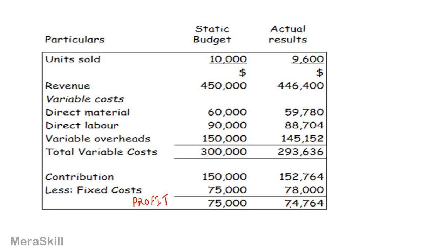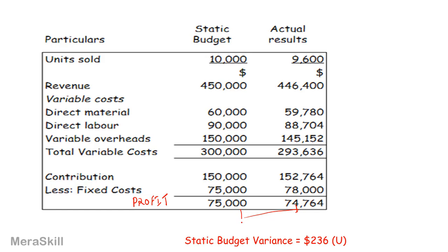Profit has come down, so we have a budget variance. The difference is 236. Is it good or bad? It is bad because the actual profit is lower than the budgeted profit. Therefore, the static budget variance is 236 unfavorable.